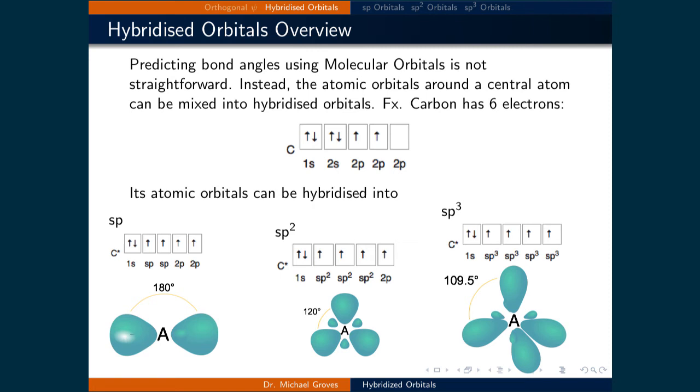Using wave function solutions to the Schrödinger equation can also be used to predict bond geometries. However, using molecular orbitals where the complete basis set is considered can be complicated and time-consuming. Instead, a limited number of atomic orbitals around the central atom can be mixed into what's called hybridized orbitals, which will have specific orientations according to the degree of hybridization. This framework justifies Lewis structures in the language of quantum mechanics and provides a theoretical basis for VSEPR rules.